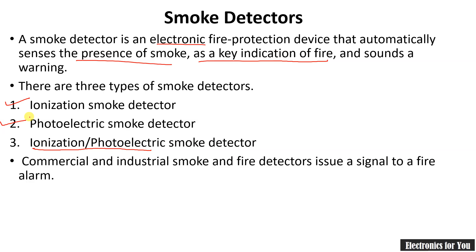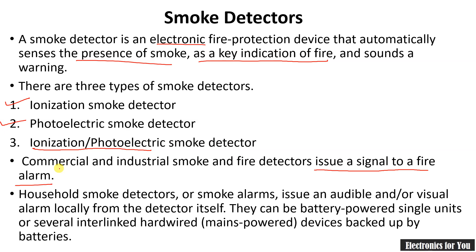Commercial and industrial smoke detectors issue a signal to a fire alarm, whereas a household smoke detector may indicate an audible or visual alarm locally from the detector itself. Generally, household smoke detectors are battery-powered single units or may be interconnected with hardware devices backed up by batteries.